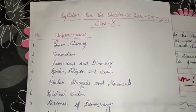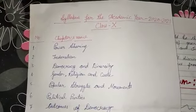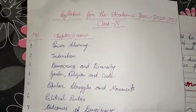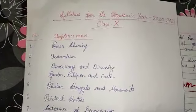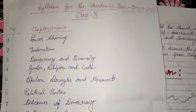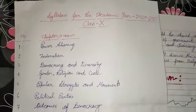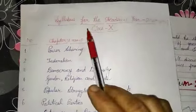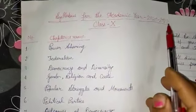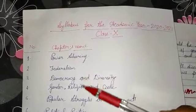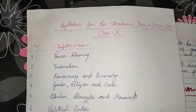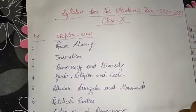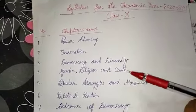Hello students, today we are going to start political science of class 10th. In the starting, first of all we should discuss the syllabus of the academic year 2020-21. Students, there are 8 chapters in the syllabus. So first of all we shall know the name of the chapters one by one.